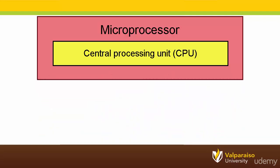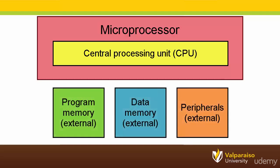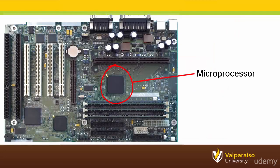What about the rest? Well, since the microprocessor just contains the CPU, the remainder of the functional blocks are generally added to the system with external integrated circuits. Take a look at this integrated circuit board. The highlighted integrated circuit is a microprocessor. The rest of the integrated circuits or computer chips provide the microprocessor with its data memory, program memory, and peripherals.